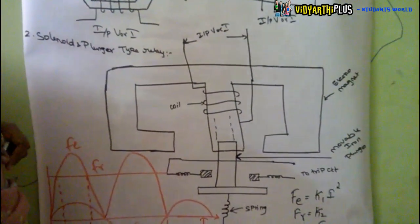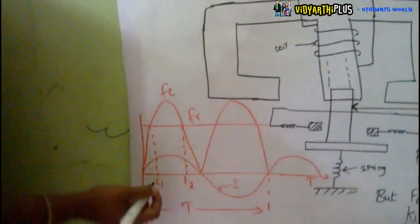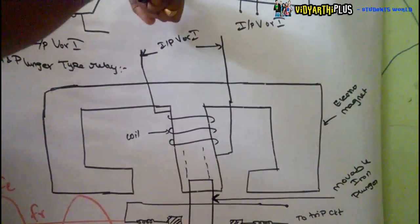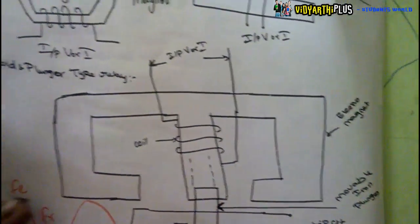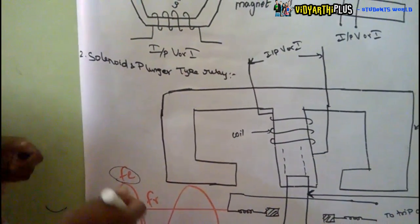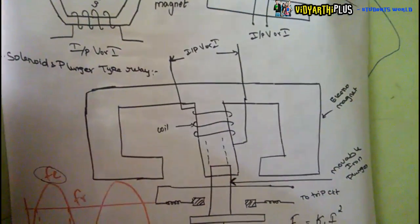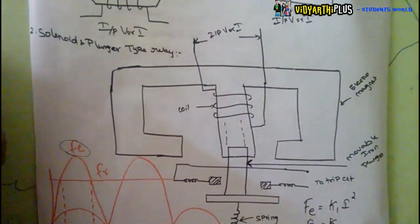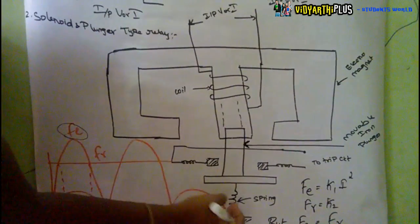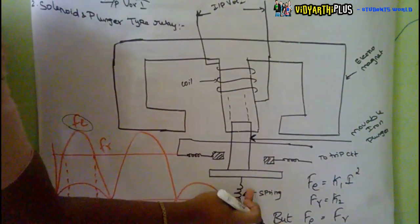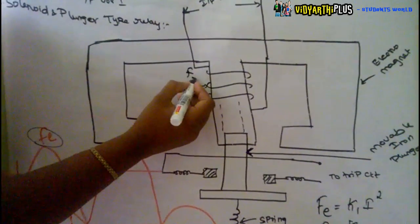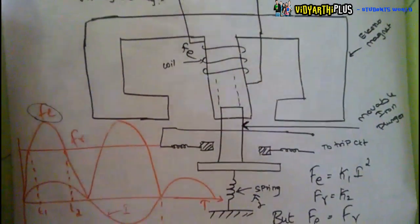This relay is suitable both for AC and DC operations. There are two forces shown in the graph: the electromagnetic force and the restraining force. The electromagnetic force is the force that attracts the plunger upward during abnormal conditions. The restraining force is the force exerted by the spring to pull the plunger back down after operations are complete and the system returns to normal.